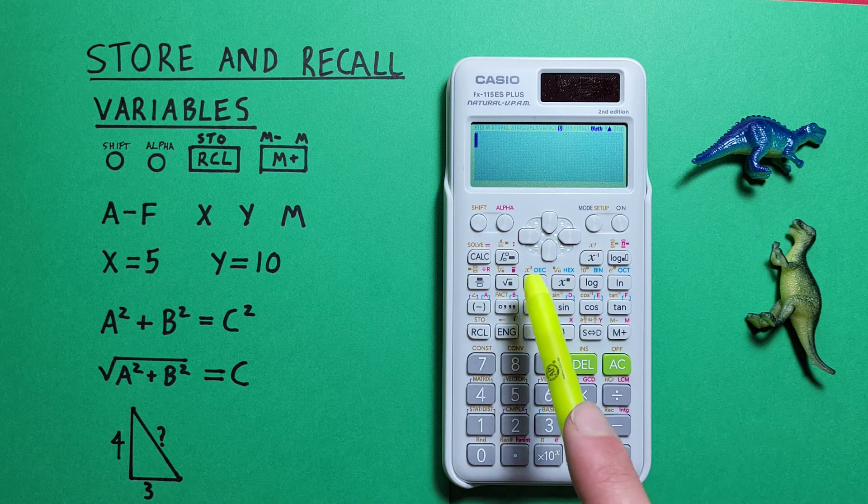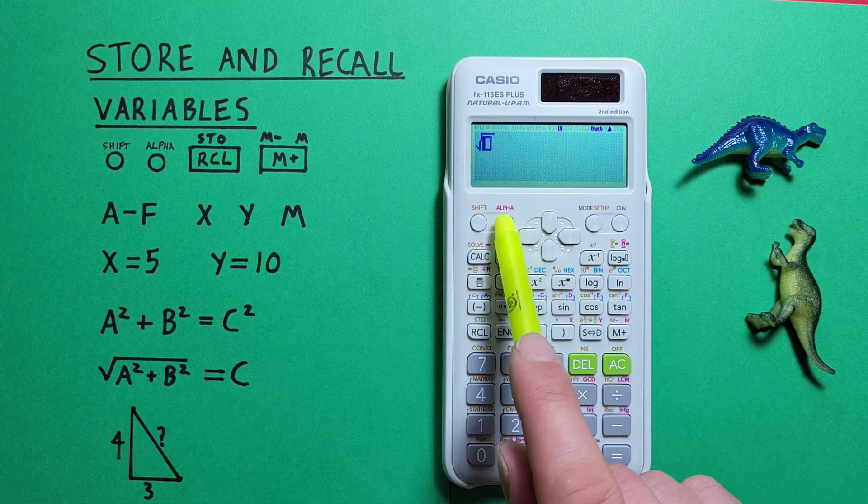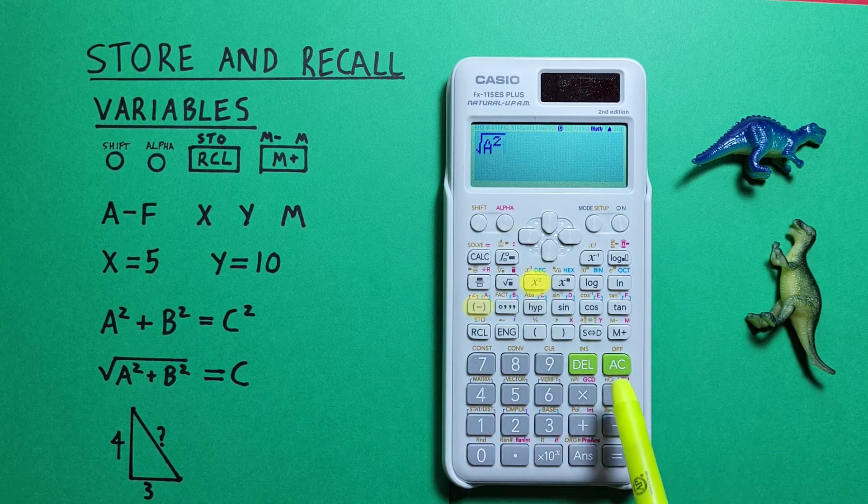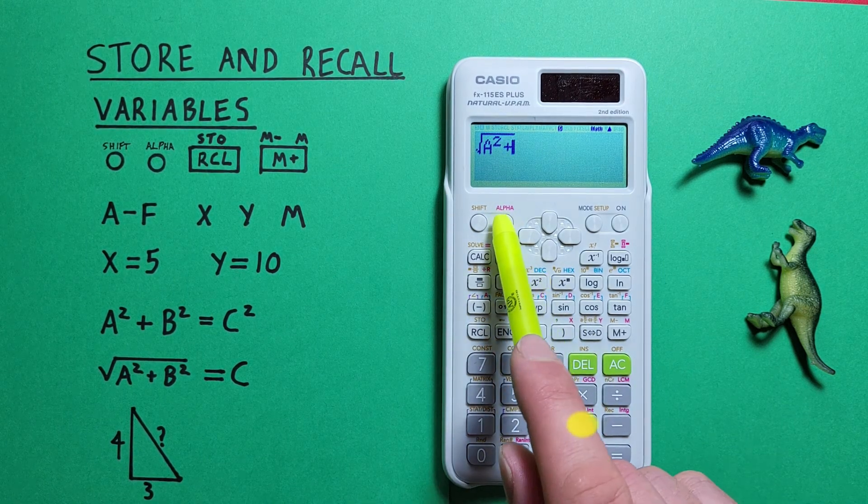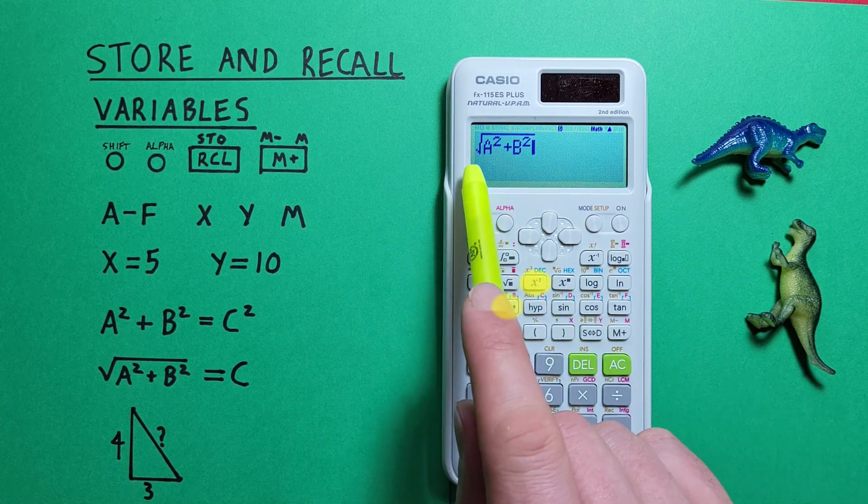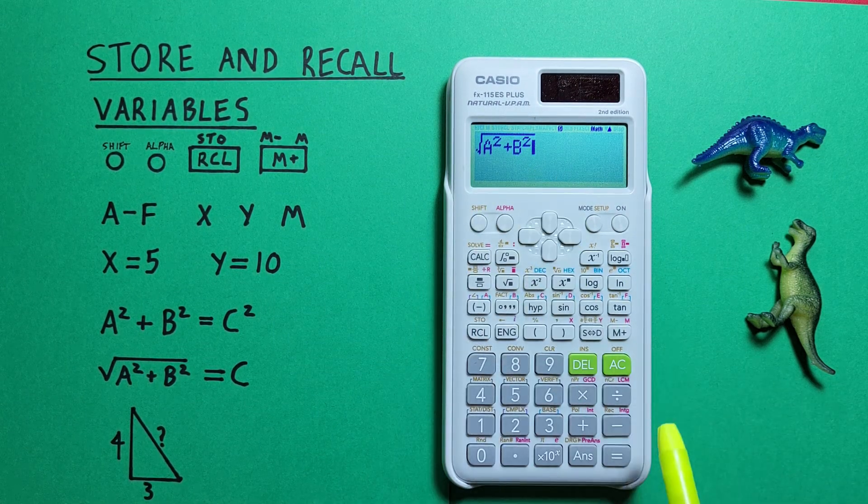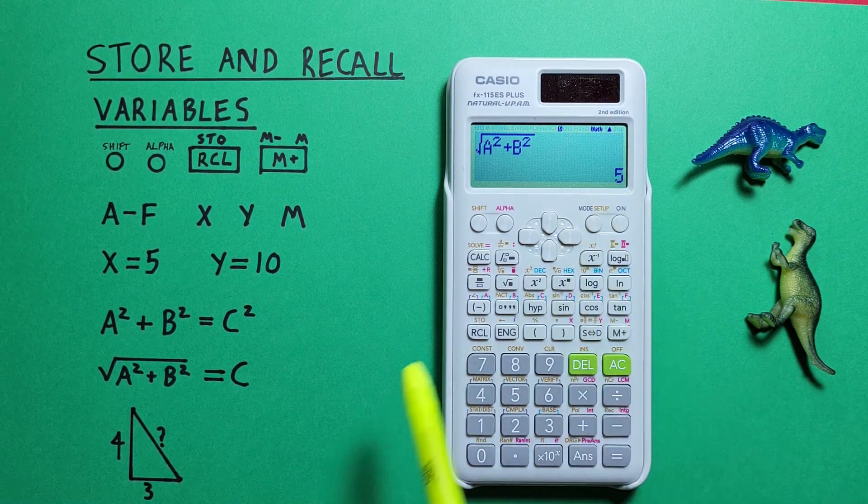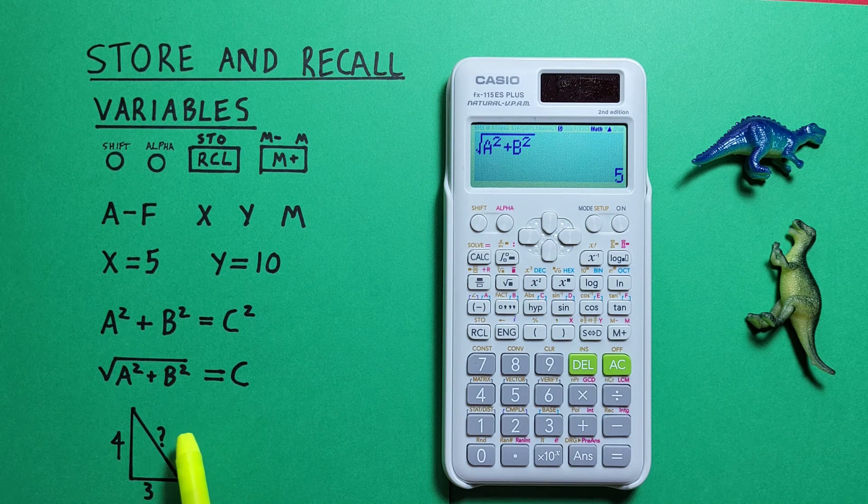So we go square root of alpha a squared plus alpha b squared. There we go. And press equals. And we get a result of 5. So our c side is 5.